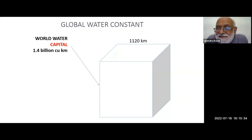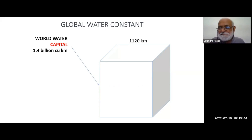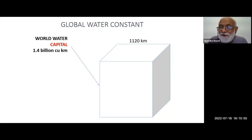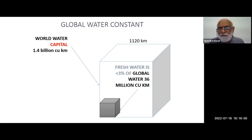So how much water do we have on the planet? Dr. David Suzuki once said that if all the world's water — cloud water, ocean water, river, lake, underground, atmospheric moisture, everything — is frozen into a cube, each side of that cube would be 1,120 kilometers.